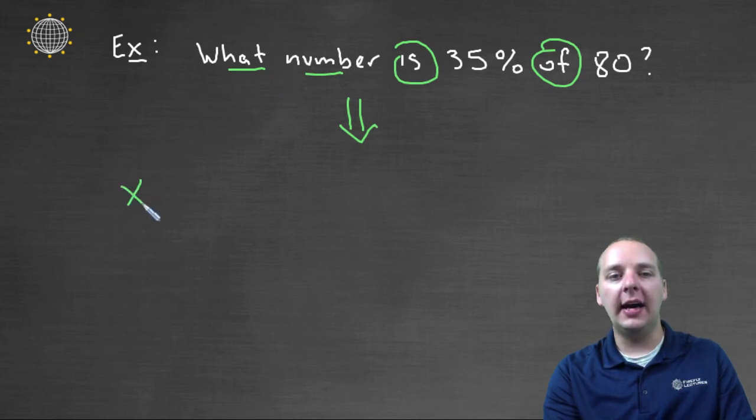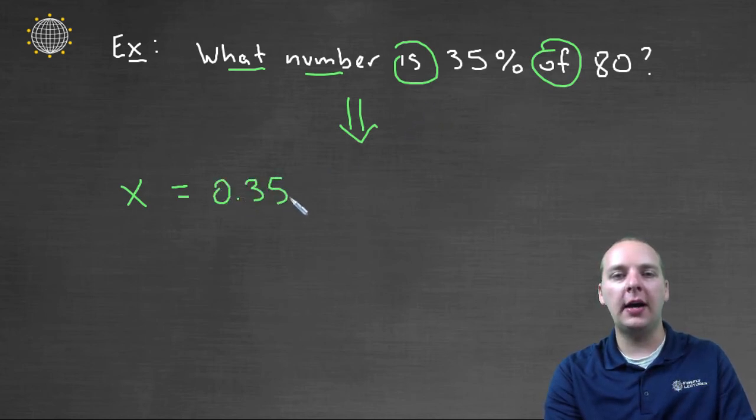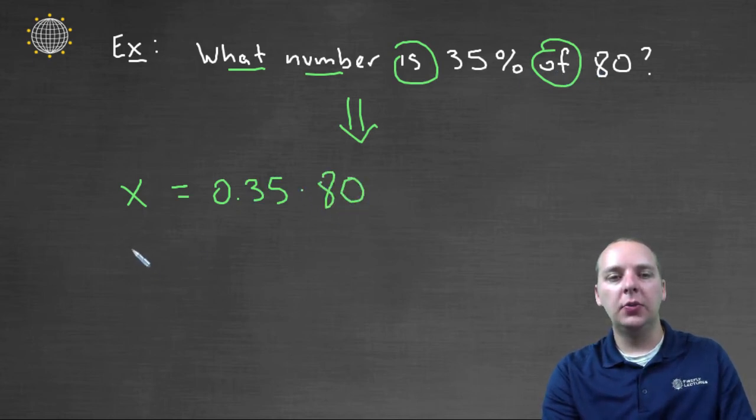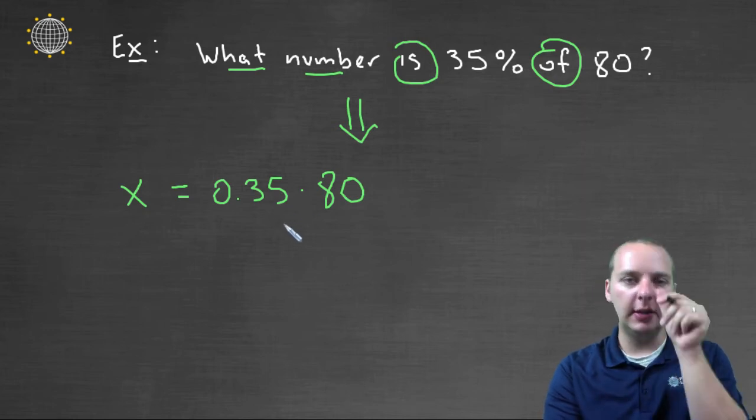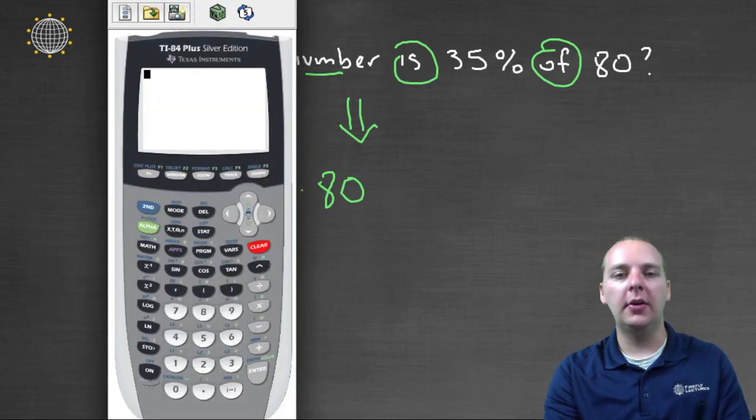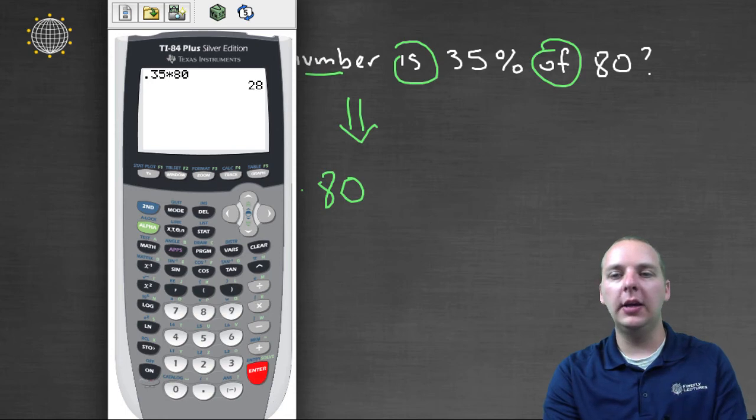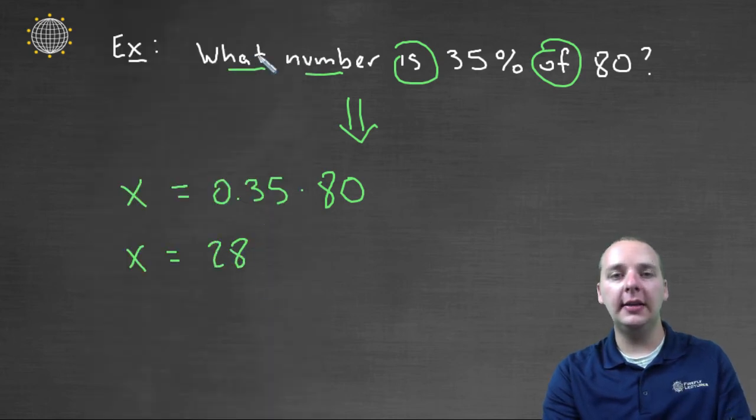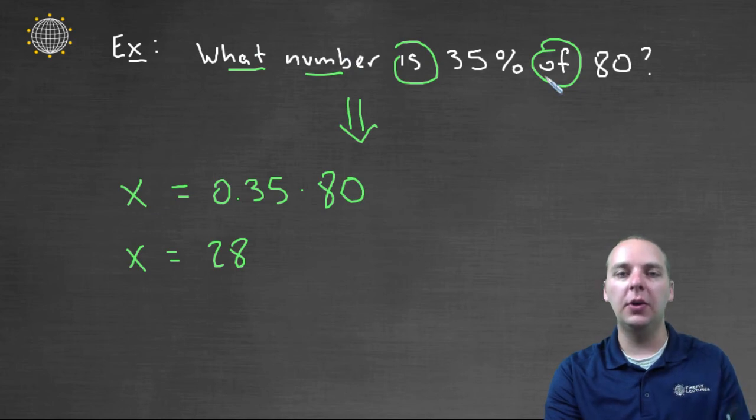For instance, we could say x, as in what number, is, which is equals, thirty-five percent, that's zero point three five, of eighty, which would be times eighty. So we could solve our equation once we've translated it into an equation with constants and variables. So in this case, we could go to our calculator. We take point three five times eighty, thirty-five percent of eighty would be twenty-eight. So twenty-eight is thirty-five percent of eighty. And we could only have done that if we translated it into an equation.